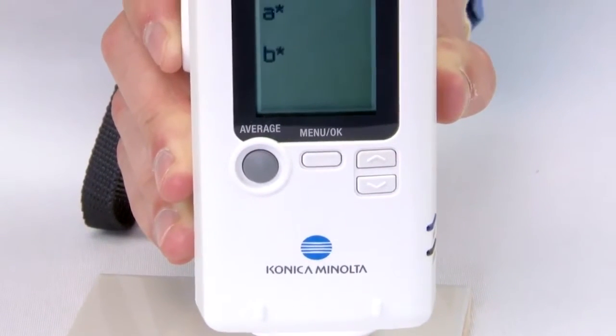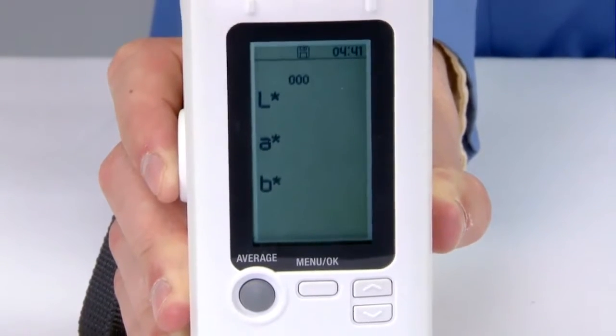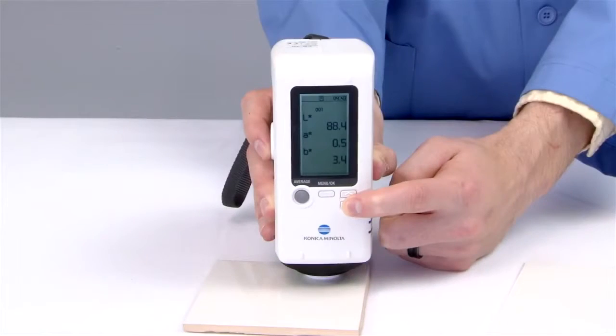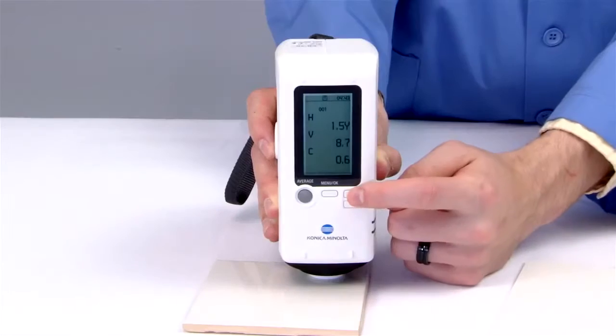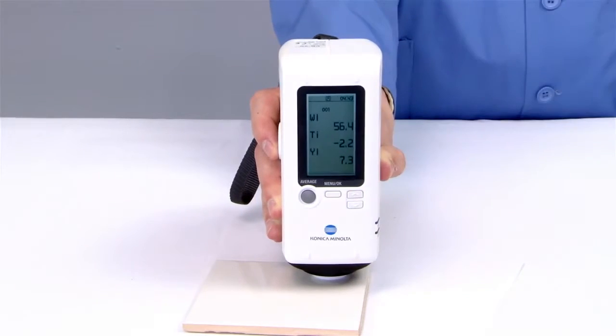Display measurement results from one of eight color spaces, including LAB, LCH, YXY, Munsel, whiteness, tint, and yellowness.